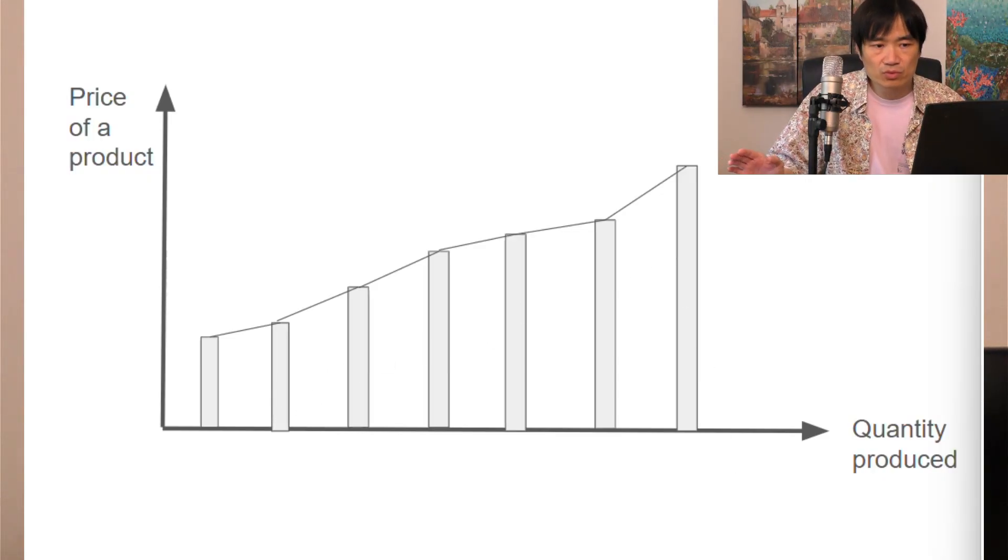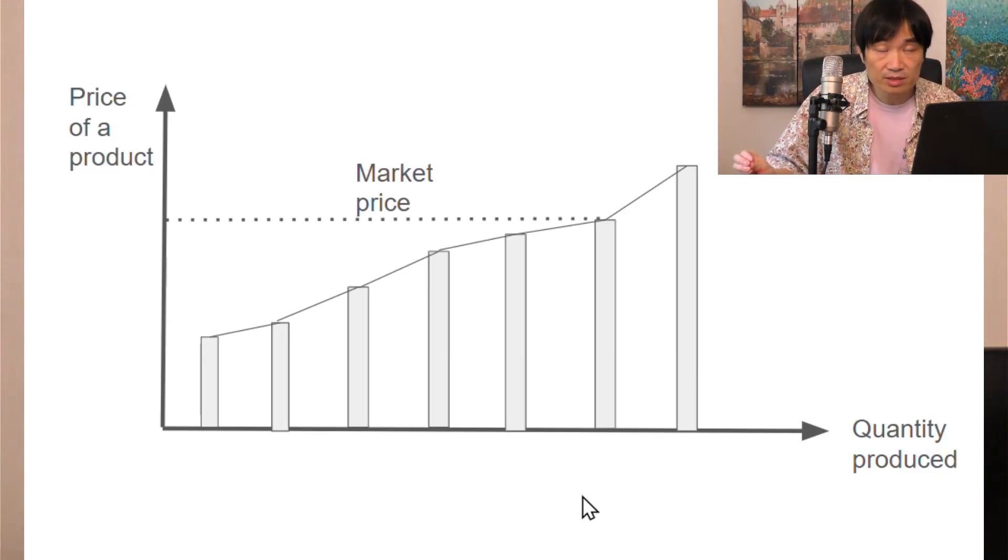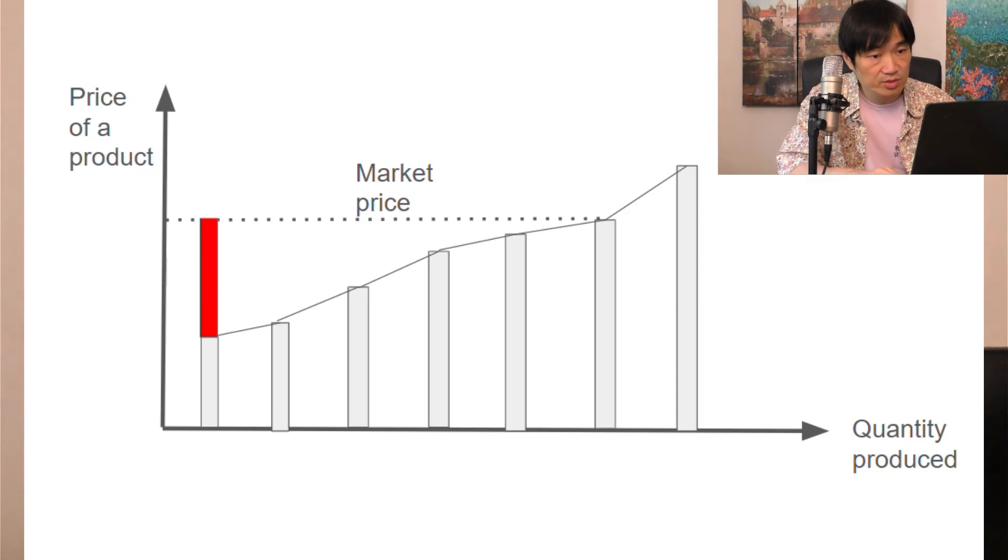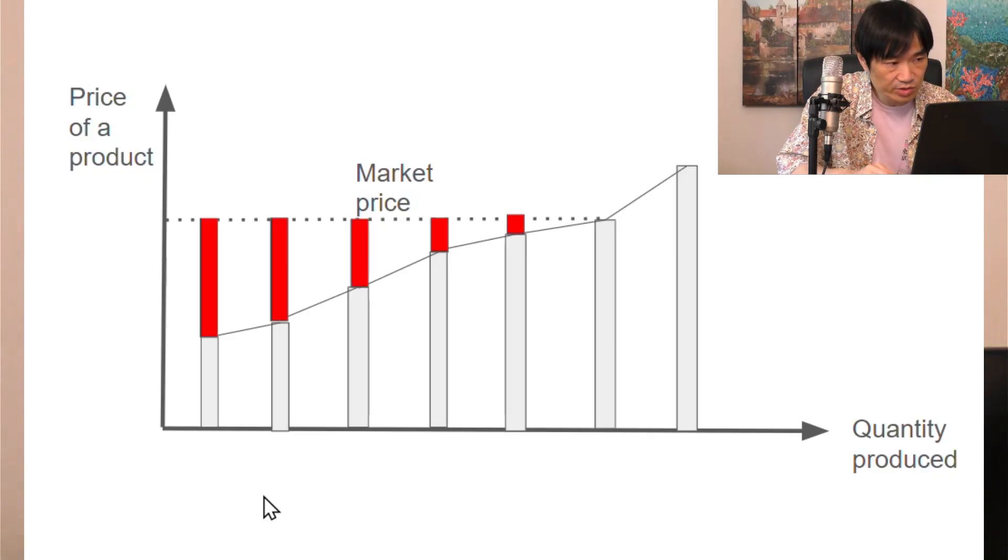Now let's think about what's the total amount of money the producers will earn under a certain price. This unit will earn the producer a lot of money because it was produced with a very low cost. This unit, not so much. This is your profit - the distance between your production cost and the market price. So the total amount of money earned by all the producers, which is called the producer surplus, is the sum of all these individual profits.